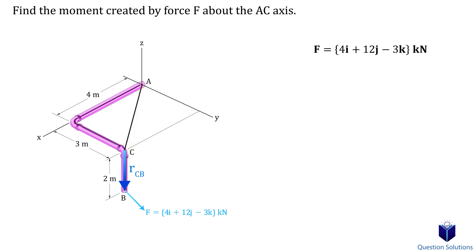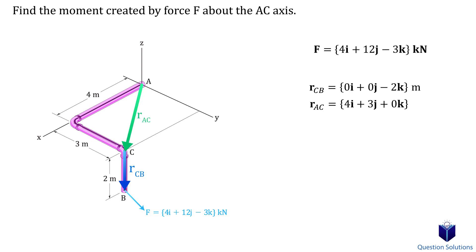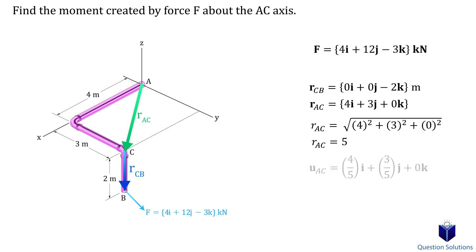I'm going to use C to B since that's easier to write, but I encourage you to try it with the position vector from A to B as well to verify you get the same answer. Lastly, we need a unit vector from A to C. To get it, we first find a position vector from A to C, then compute its magnitude.